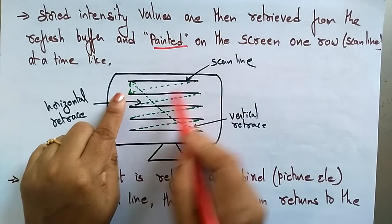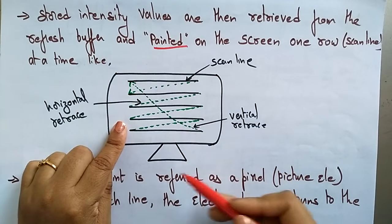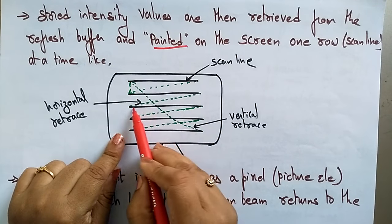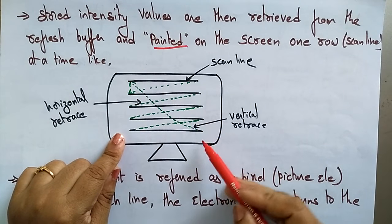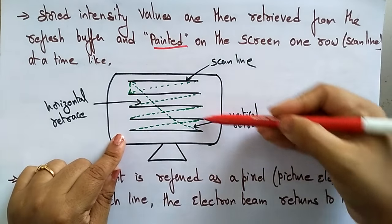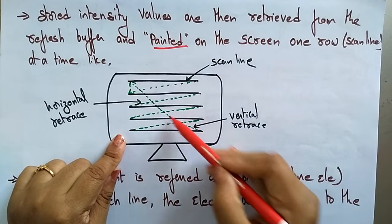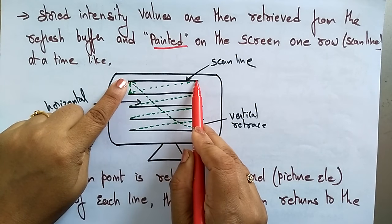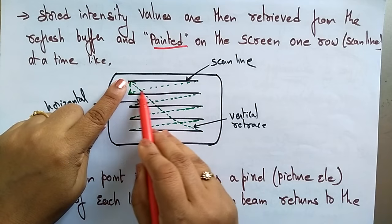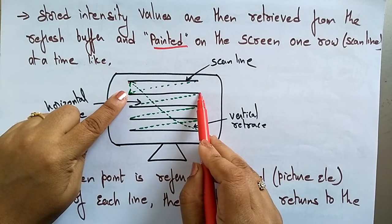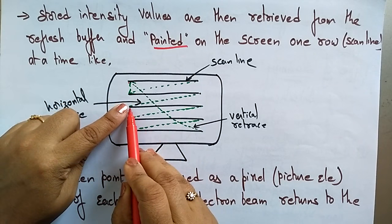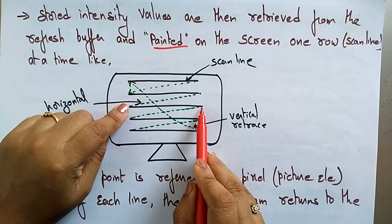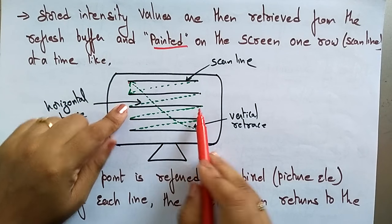Each row is called a scan line, and these are the horizontal lines. When the beam goes back, this is called a horizontal retrace, and this is the vertical retrace. The electron beam starts here and continues till the end of the screen, then comes back to the next row and continues till the end of that scan line, and again comes back to the start of the third row and continues until that scan line ends.